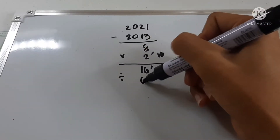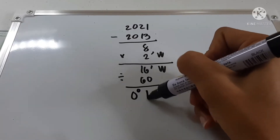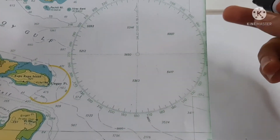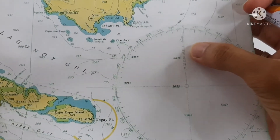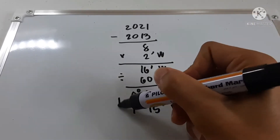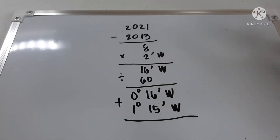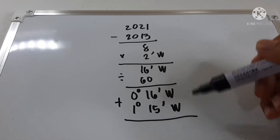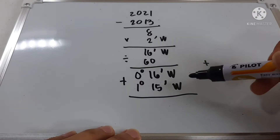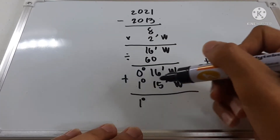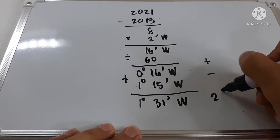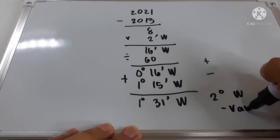To convert 16 minutes to degrees, we divide by 60, giving us 0 degrees 16 minutes west. We then add this to the chart variation of 1 degree 15 minutes west for 2013. Since they are in the same direction, we add them. If they were in different directions, we would subtract. This gives us 1 degree 31 minutes west, which rounds off to 2 degrees west — the updated variation for year 2021.